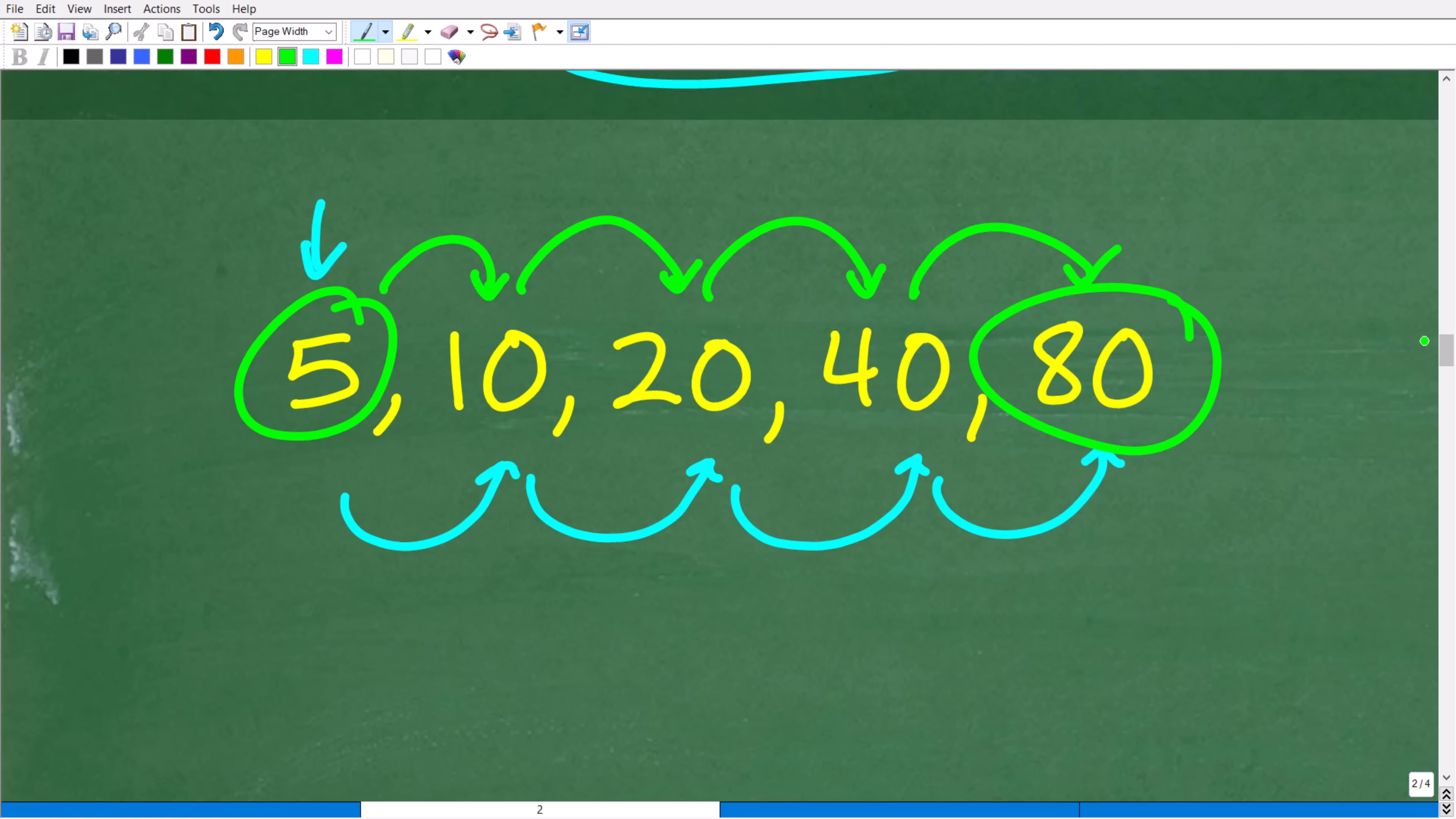Okay. So, a lot of you could have taken all different sorts of approaches. You could have actually started with 80 and worked your way backwards. Or you could have just guessed and checked. Maybe you said, oh, let me take 3 and double 3. We're looking for some sort of integer value here. So, I would have been, oh, that's 6. All right. Then, it would have been 12. And you're like, well, I don't think I'm going to be able to get to 80.